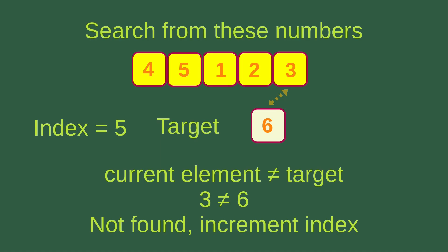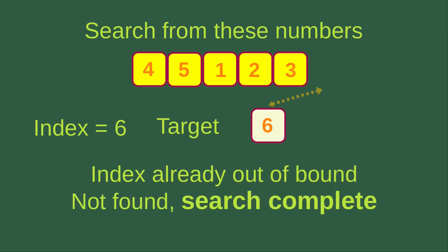Now the index is six, which is already beyond the largest index of the list, which was five. So the target has nothing to compare with — the index is already out of bounds. In this case, we can say that the target is still not found. After going through the entire list, the search is complete, but we cannot find the target from the list.